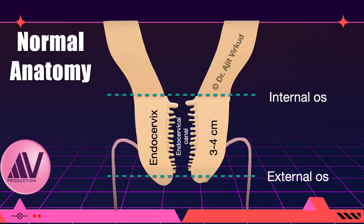The cervix measures about 3–4 cm in length and 2.5 cm in diameter. The opening between the uterine cavity and the cervix is called the internal os. The canal between the internal and external os is called the endocervical canal. The tissue surrounding the endocervical canal is called endocervix. To emphasize the point about the cervix and uterus being separate organs, the cervix has its own anatomy, its own physiology, and its own pathology, especially cancer.